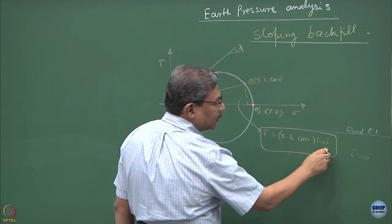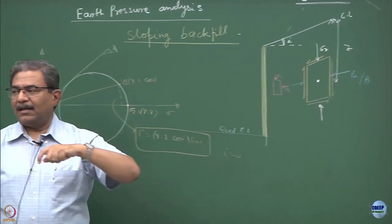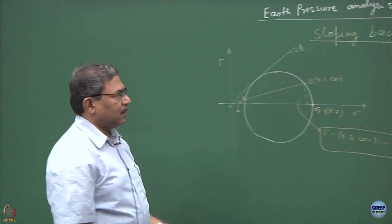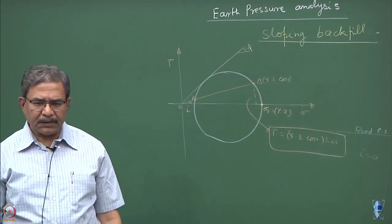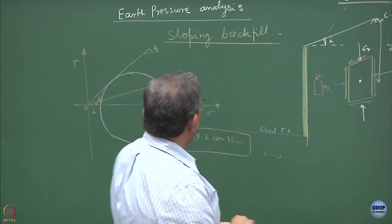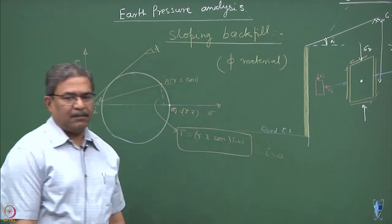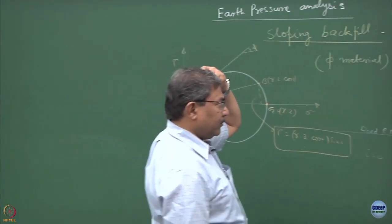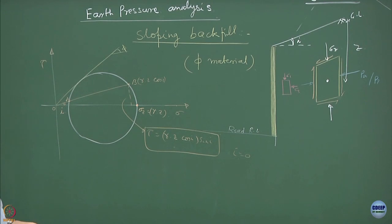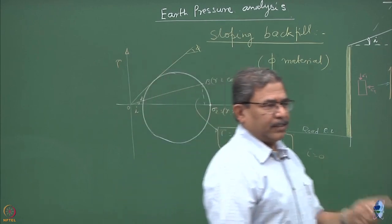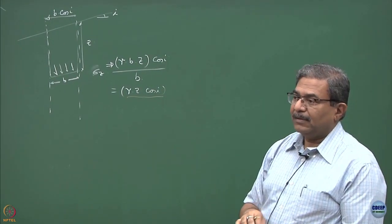If you substitute i = 0, the shear stress becomes 0, meaning the element assumes the form of principal stresses with sigma_1 and sigma_3 — this is a good cross-check. This analysis is for purely frictional (phi) material only; the cohesion component cannot be included because it is a Rankine wall. As it is not easy to deal with non-Rankine situations, we need to introduce Coulomb's earth pressure theory.